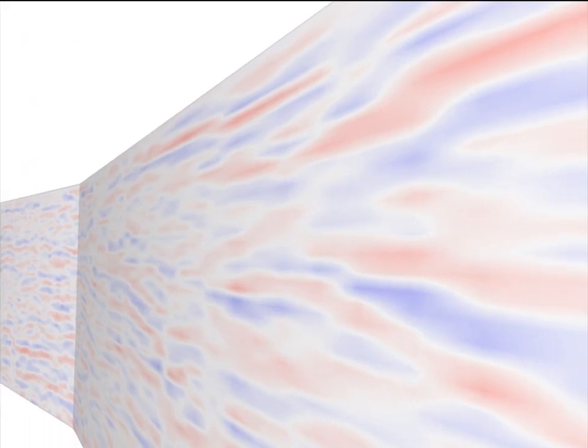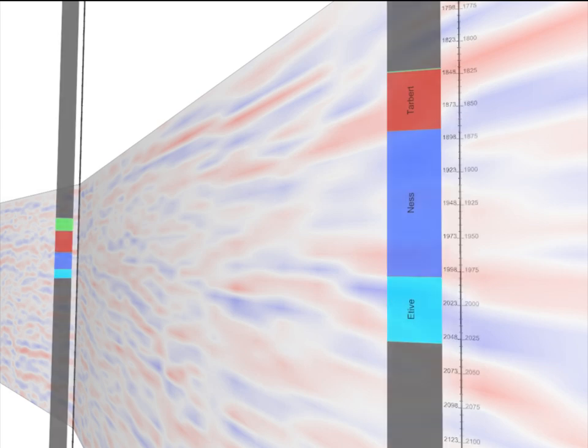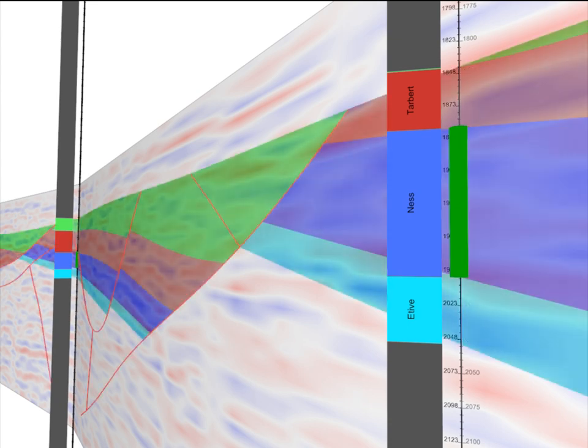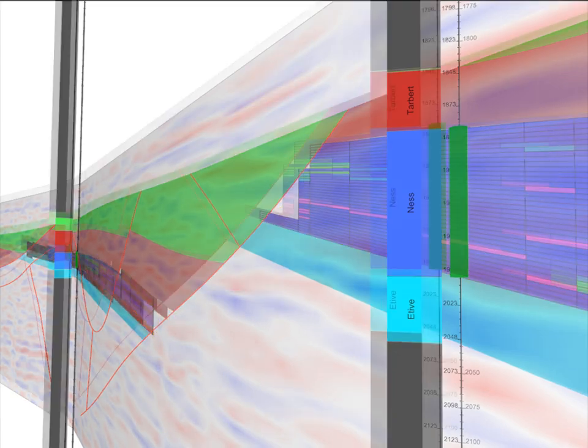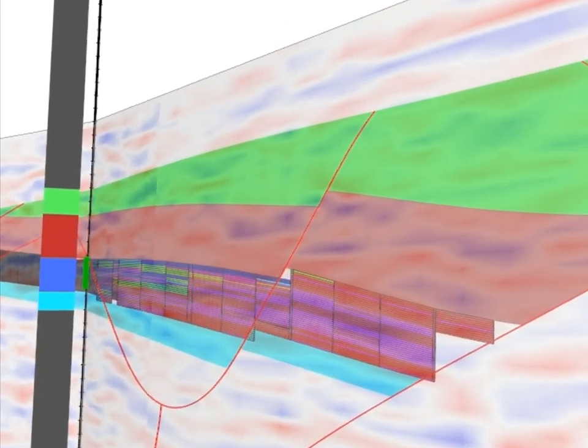All the data you work with in the modeling and simulation workflows can be combined for quality control. Well logs, well completions, structural models, 3D geological grids, simulation grids. In fact, literally anything you can view in 3D or intersection.